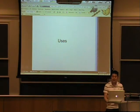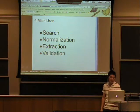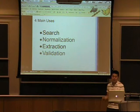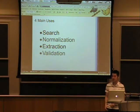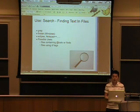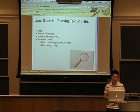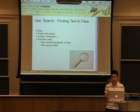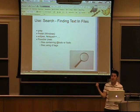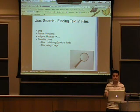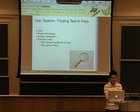Now I'm going to talk about some sample uses, and this will have real code. I separated them into four loose categories: search, normalization, extraction, and validation. One thing we can use regular expressions for is finding text in files, which is especially useful when the string we're looking for is variable. I'm going to show a quick grep — looking for files containing ampersand TODO or exclamation TODO, because maybe different programmers used TODO differently.